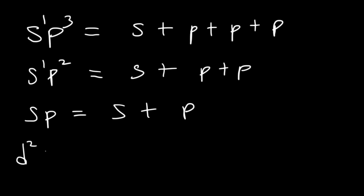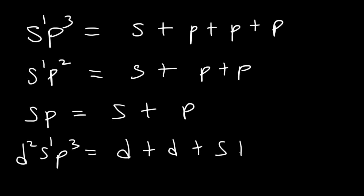So if you were to see d2sp3, this means that you're combining two d orbitals, one s orbital, and three p orbitals.